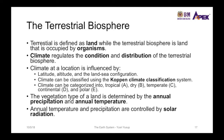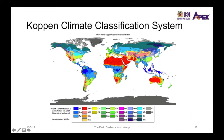The vegetation type of the terrestrial biosphere is determined by the amount of rain it receives and the temperature, while the annual temperature and precipitation are controlled by solar radiation. This map shows the Köppen climate classification system.